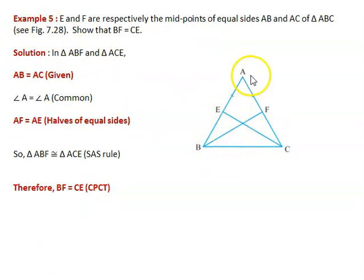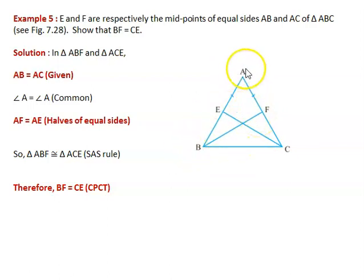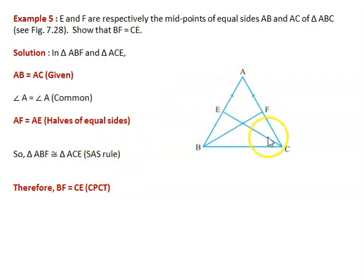Coming to Example 5: ABC is an isosceles triangle where E and F are the midpoints of the equal sides AB and AC respectively. Since E and F are midpoints, AE equals BE and AF equals CF. Since AB equals AC, AE equals AF. Considering triangles ABF and ACE: AB equals AC (given), angle A is common, and AF equals AE. By the SAS rule, these two triangles are congruent. By CPCT, BE equals CF.